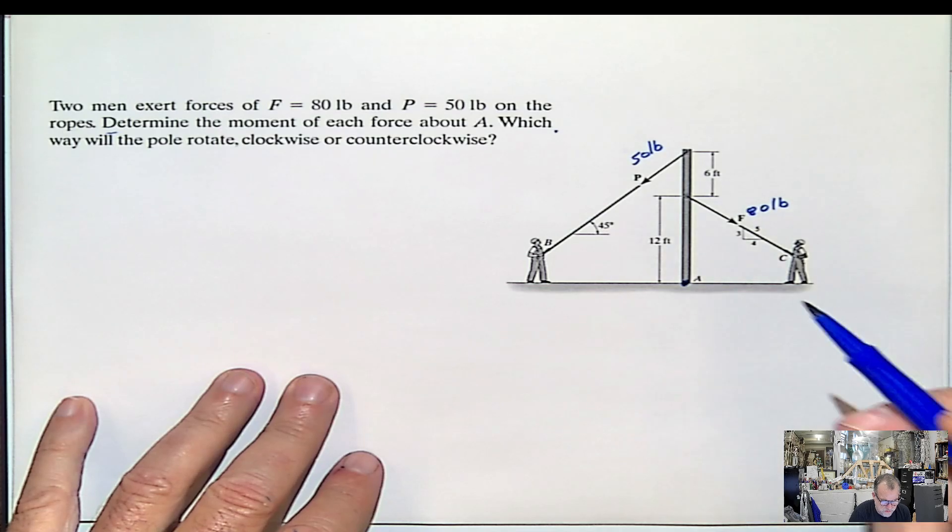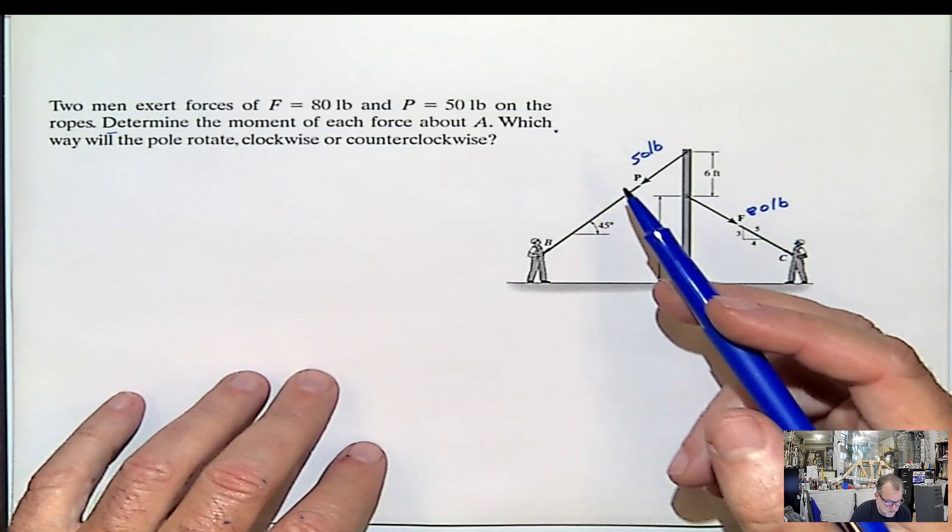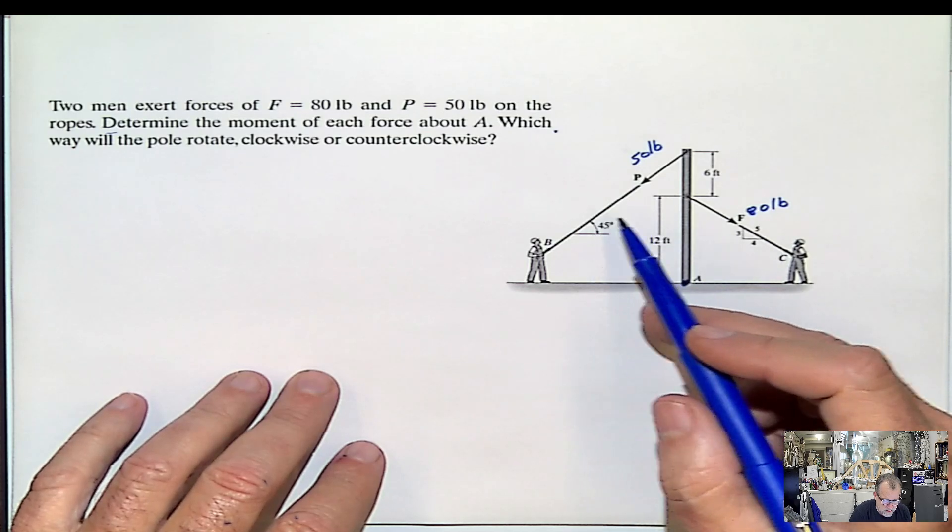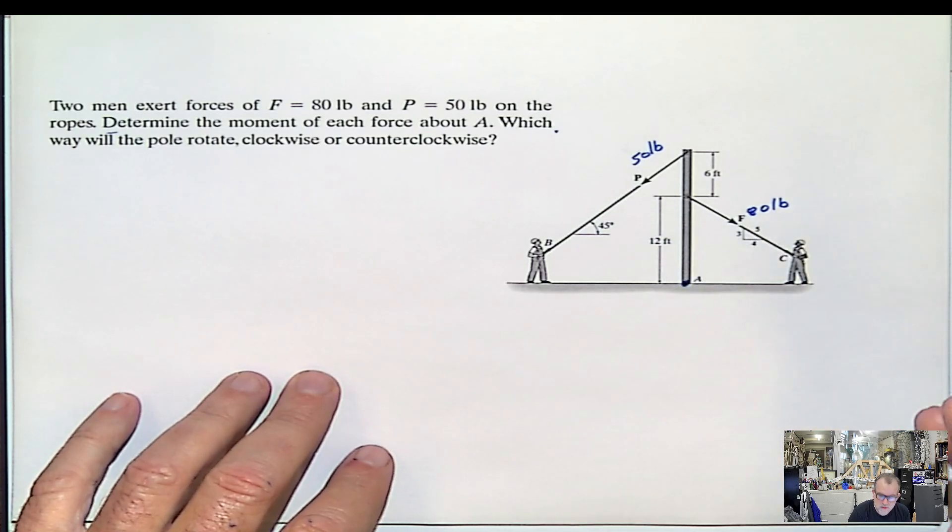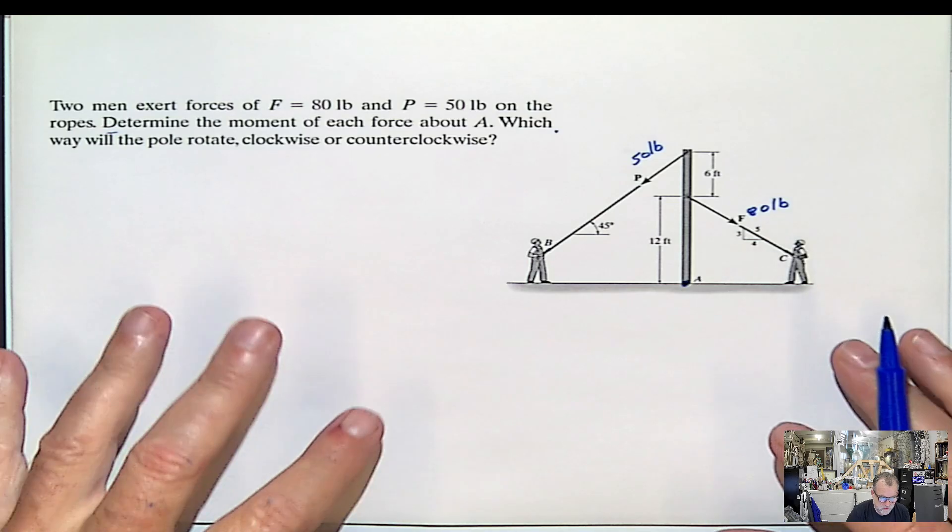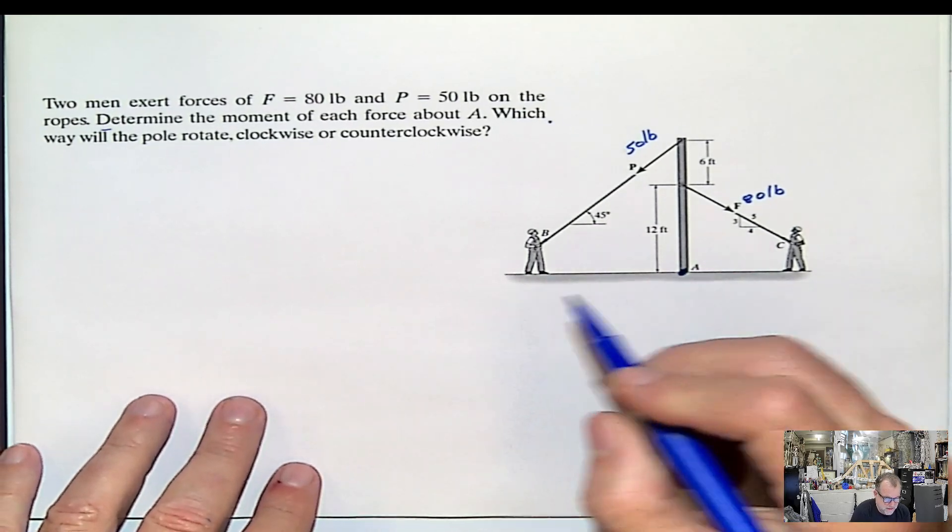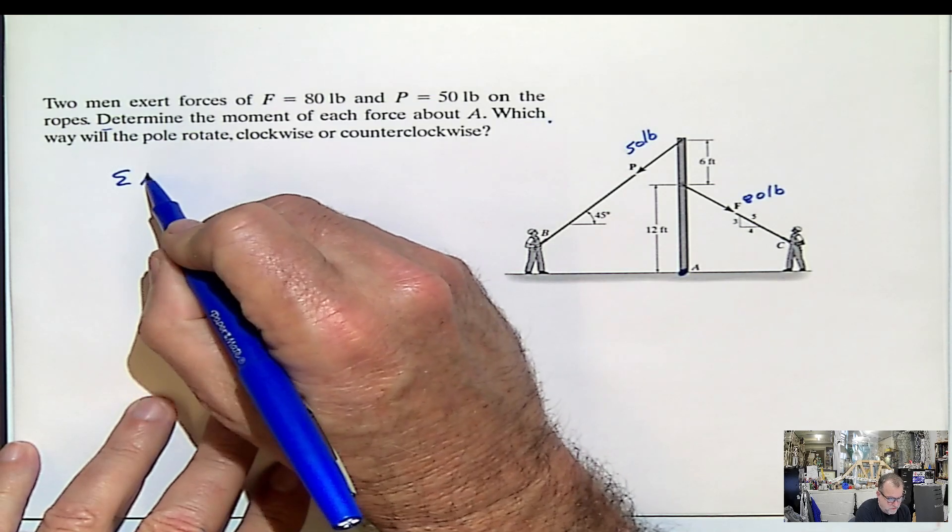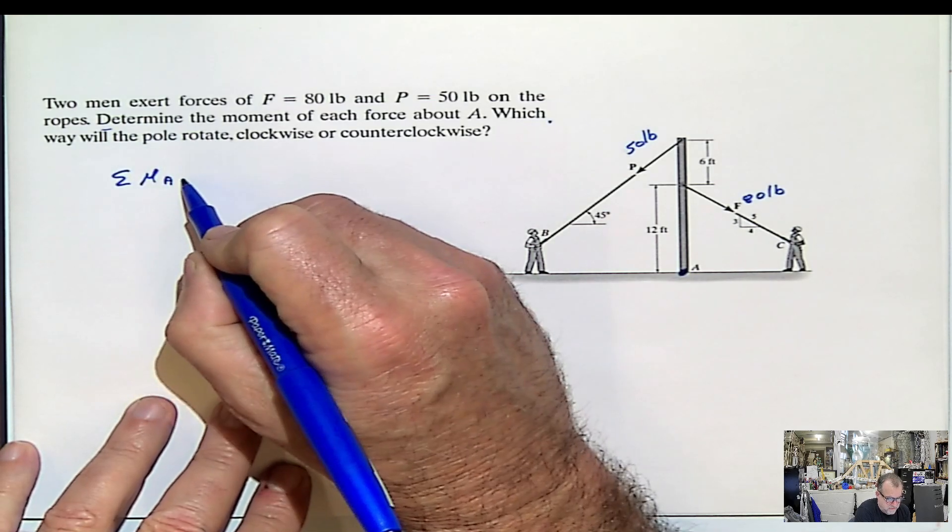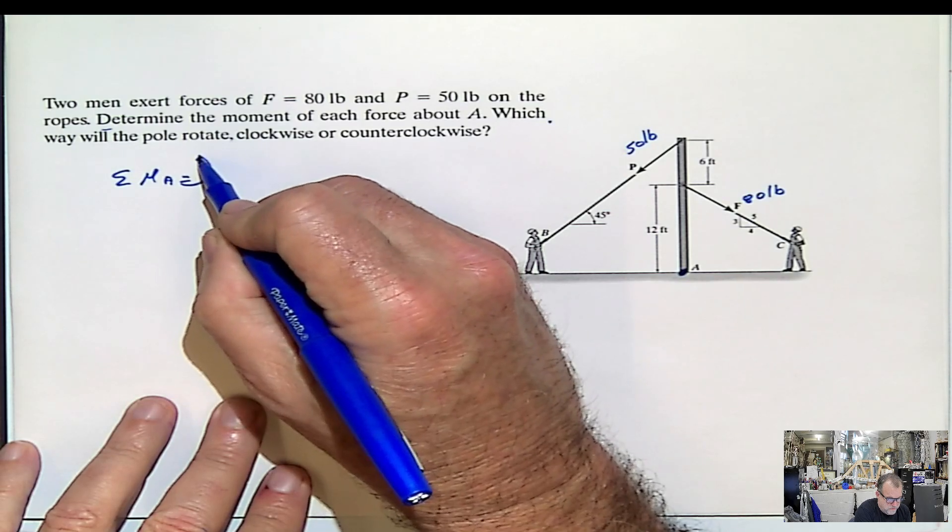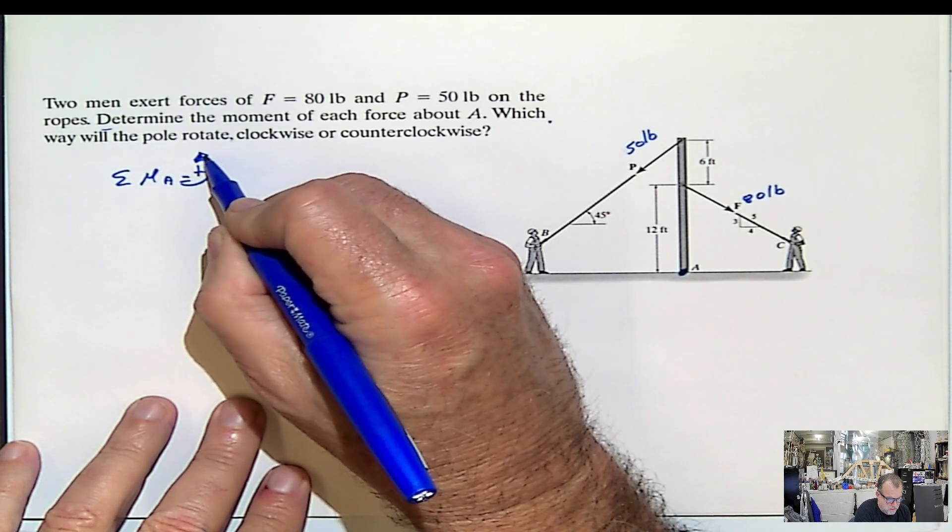So this is what you have to do. You have to calculate the total moment with respect to point A, and depending which one is the biggest one in that direction, it's going to rotate. So we can solve that problem as easy as, say, in summation of the moment with respect to the point A, and we are going to assume counterclockwise as positive.